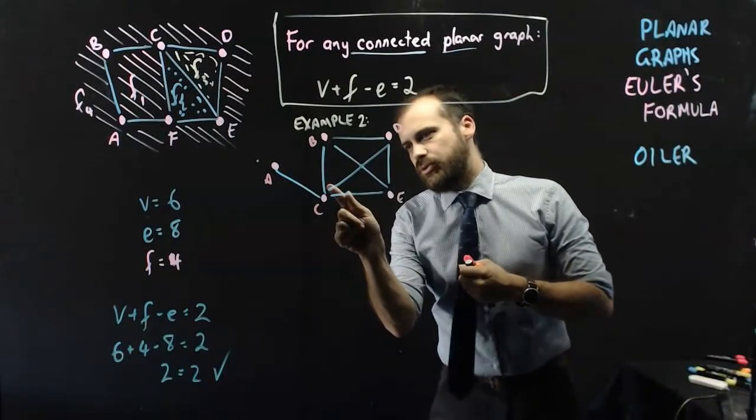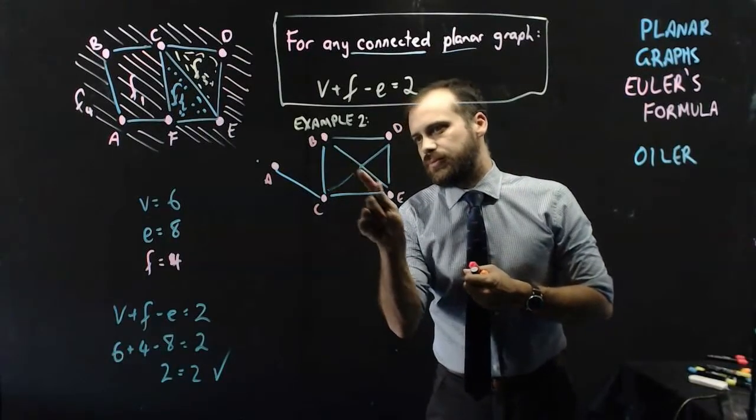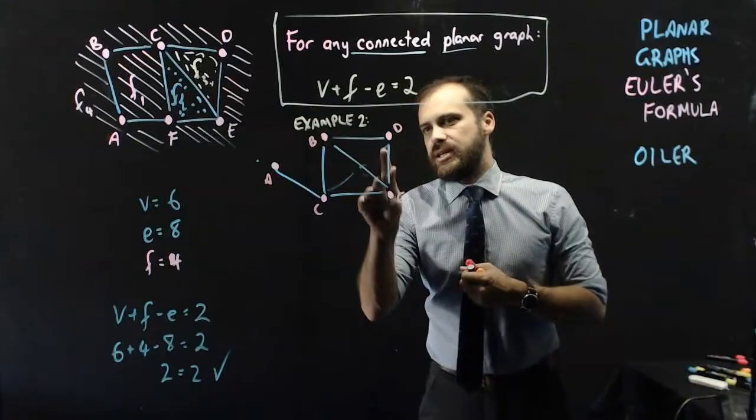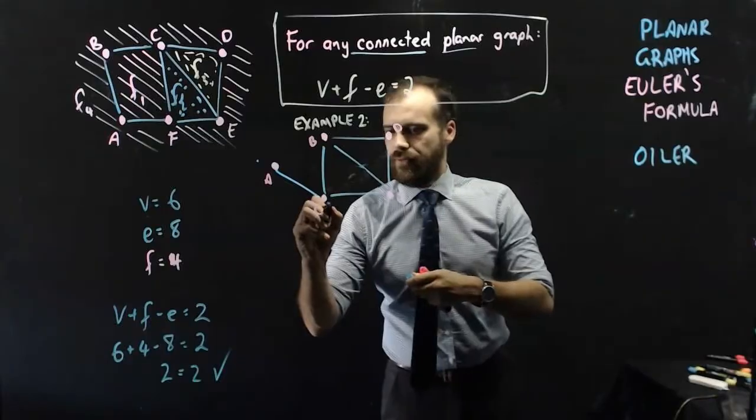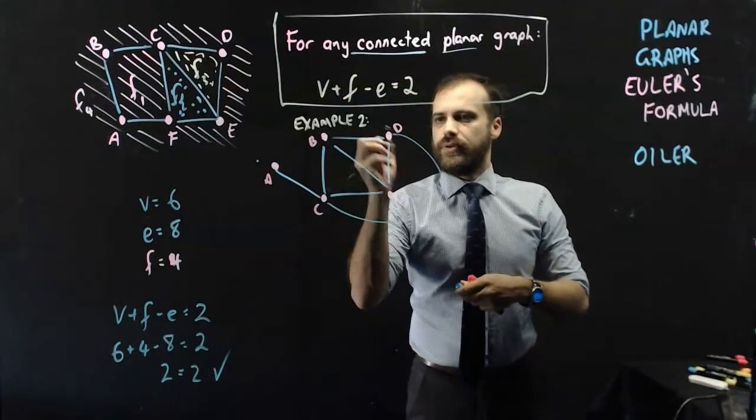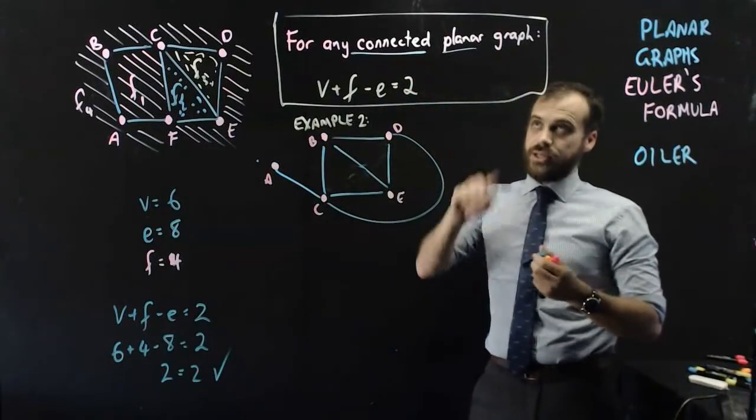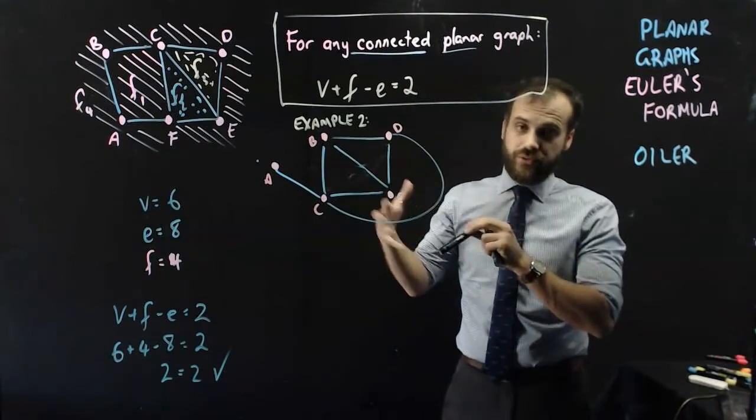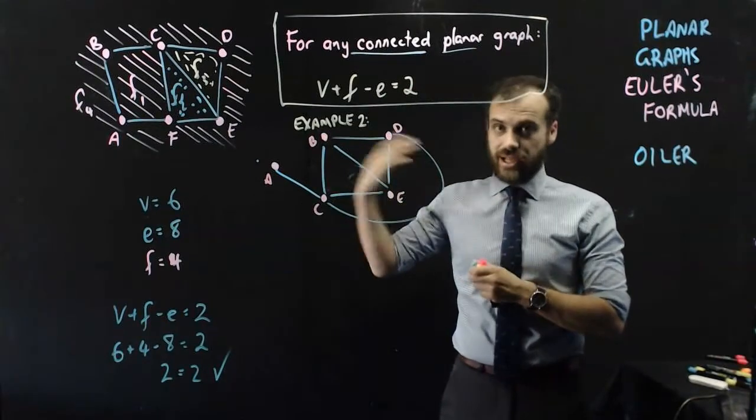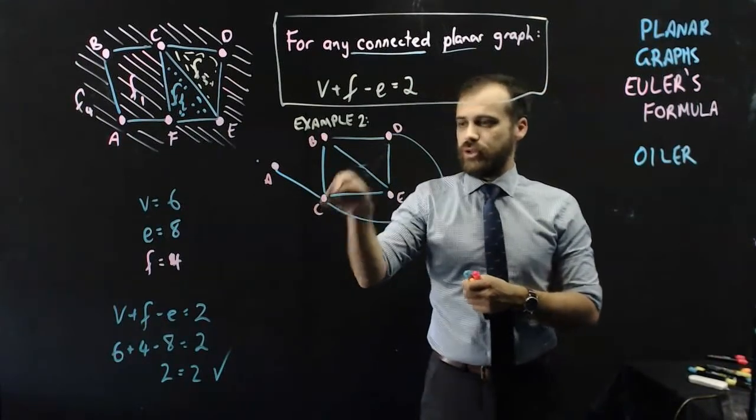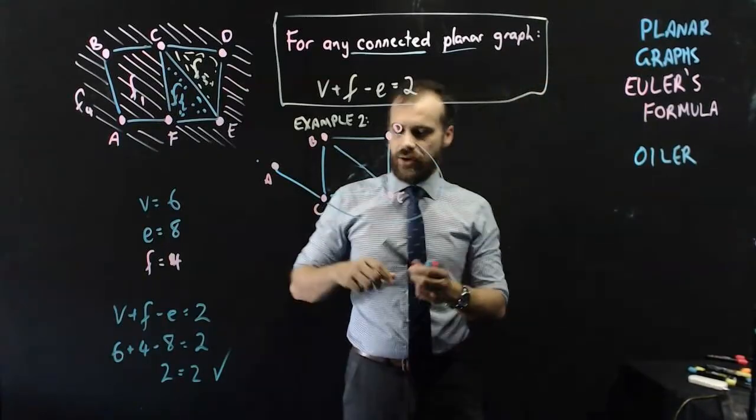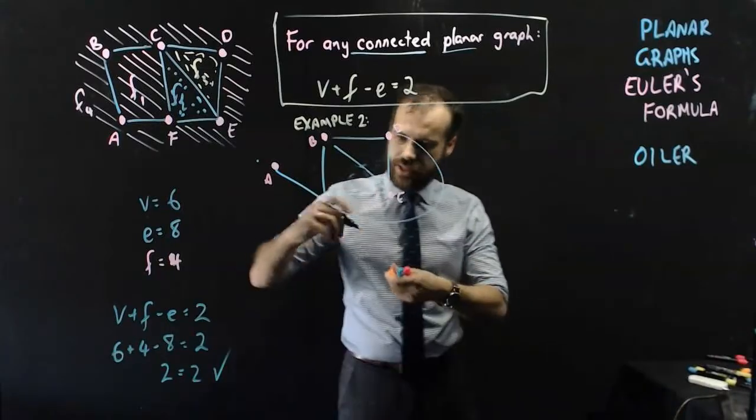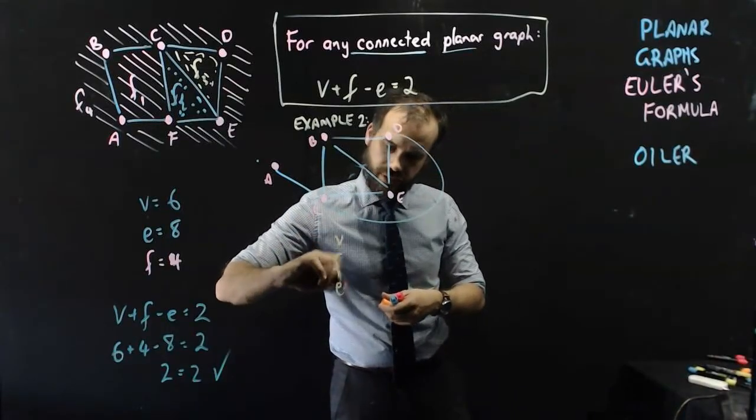Now, I'm just going to temporarily remove this one that's connecting C to D. And I'm just going to draw it around the outside. Good. Okay, now it's a planar graph. It's still an equivalent, an isomorphic graph, same as the last one, but I've just gotten rid of that line through the middle and drawn it in a different spot. Now, let's do our V, F, and E.